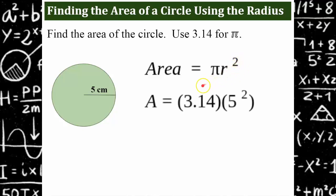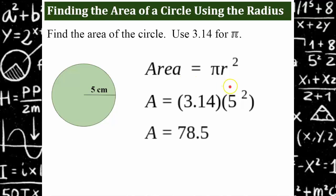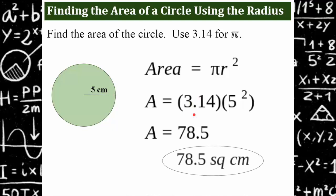So pi — we're going to use 3.14 — and our radius is 5. To calculate this, you would first do 5 times 5, which is 25, multiplied by 3.14. You get 78.5.